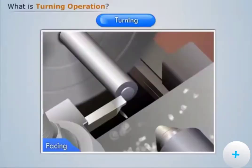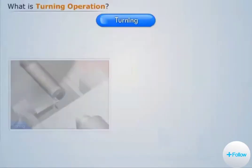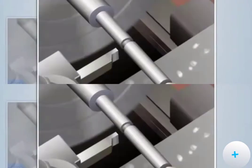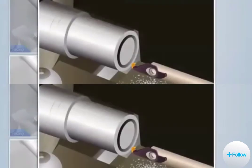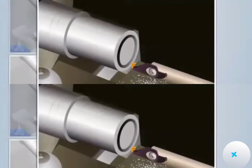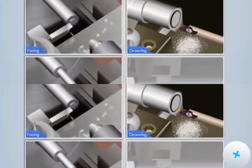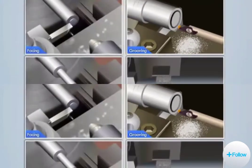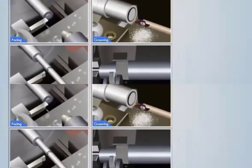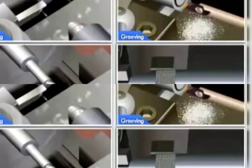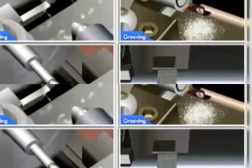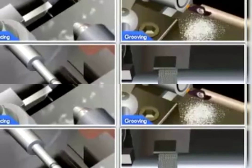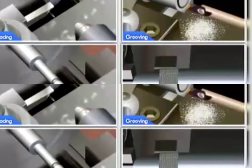Turning includes facing, parting, grooving, and knurling. Mainly CNC machines are used for the turning operation.